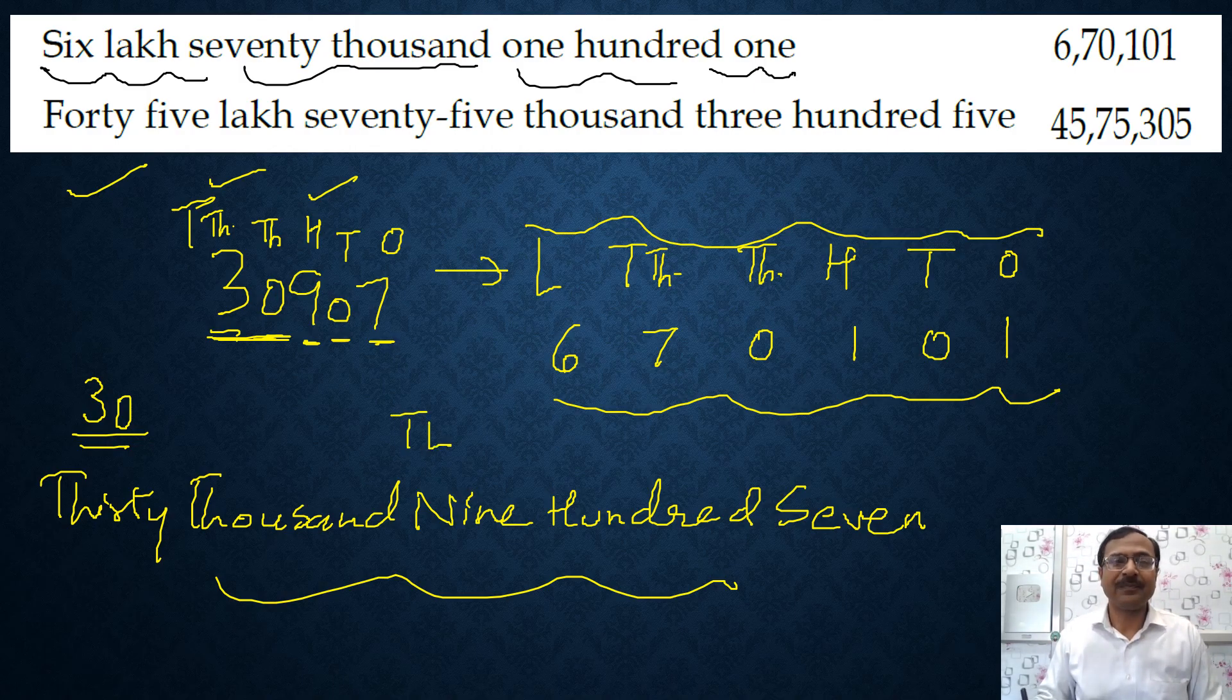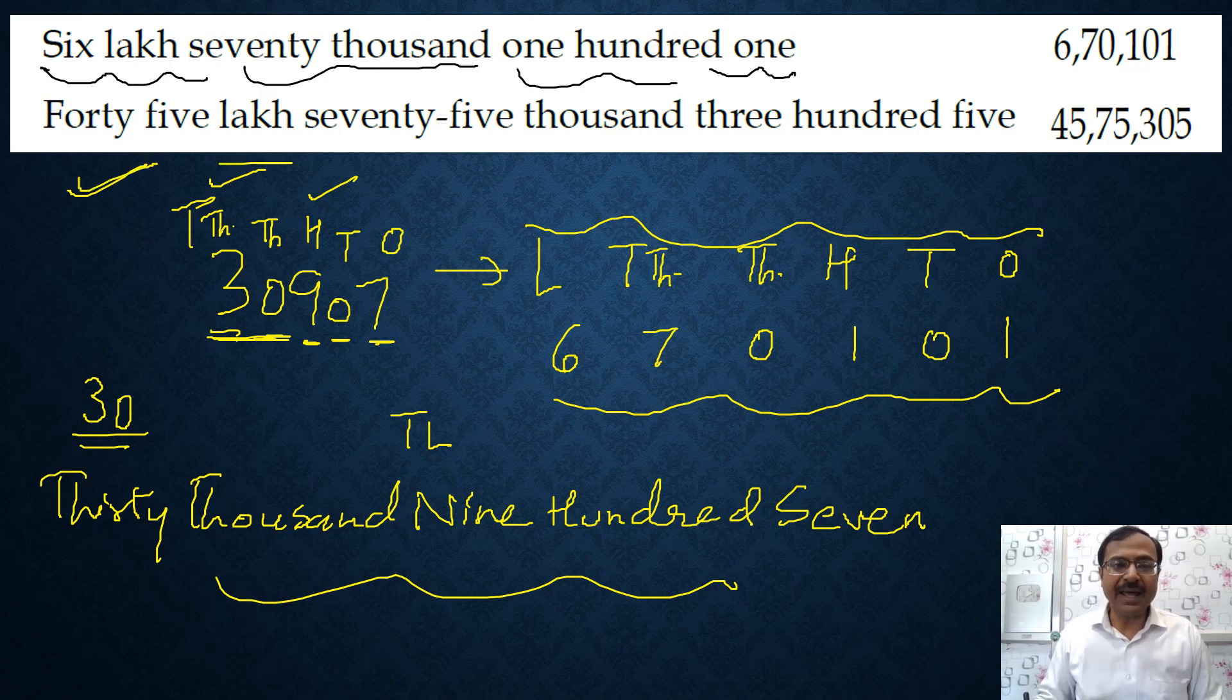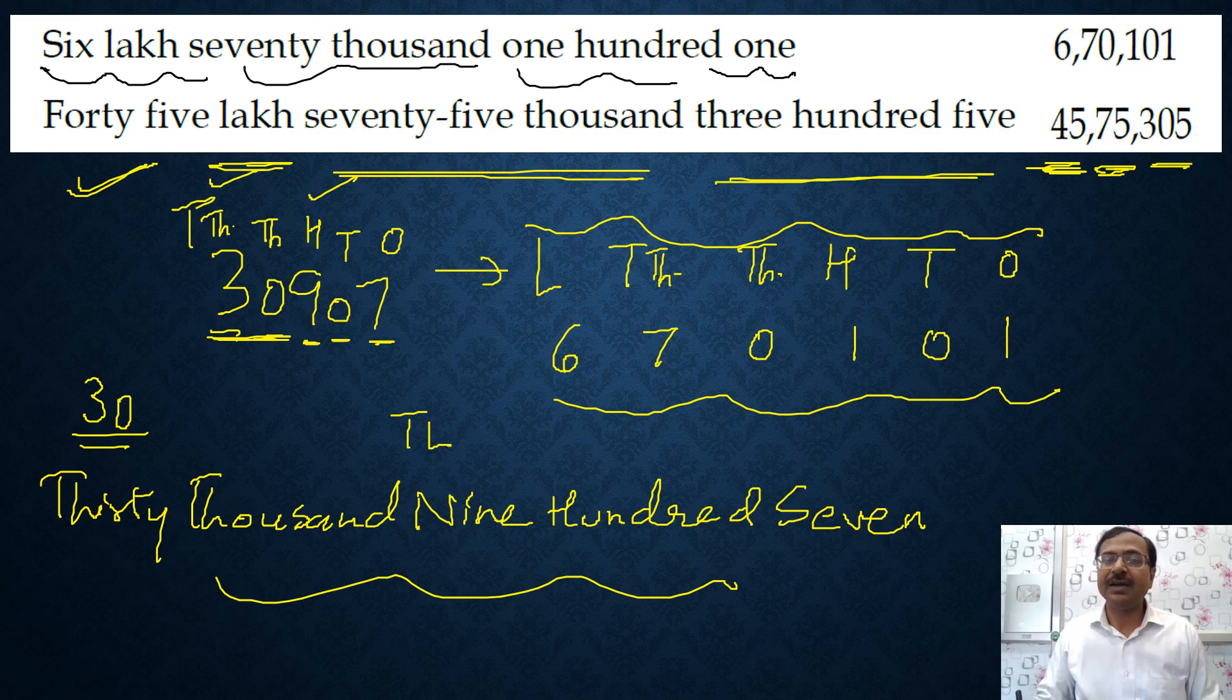So the placement boxes will come up to ten lakhs. Now forty five lakh, so 4, 5 here. We have the answer 4, 5. Seventy five thousand, so again a two digit thousands, seventy five thousand. And then very simple, three hundred and five. So 3, 0, 5 is the suffix, that means the last part of the answer.